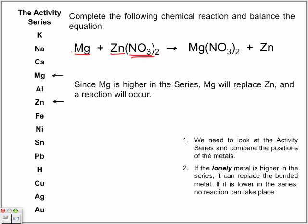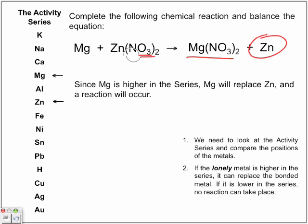Magnesium takes the place of zinc, bumping zinc out so zinc is now on its own. Remember, to write magnesium nitrate correctly, you need to use the five-step crossover rule and look at the charges. You will be given a list like this to work from.